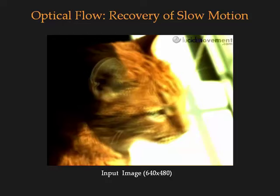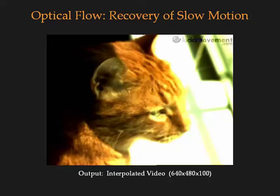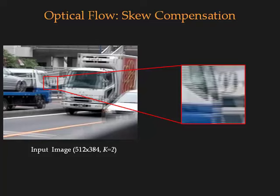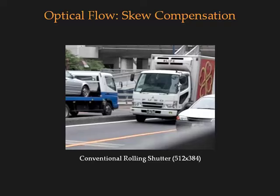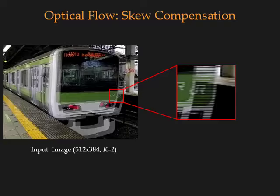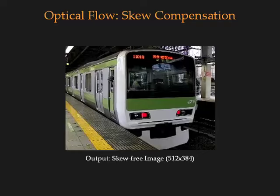Here is another example. This is the input image. This is the output video. This example shows the use of optical flow for skew compensation. This is the estimated optical flow. Here is the image taken with conventional rolling shutter. Here is the output skew-free image. Here is another example. This is the optical flow. Here is the image taken with conventional rolling shutter. Here is the output skew-free image.